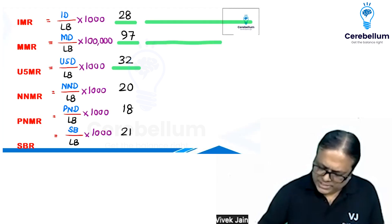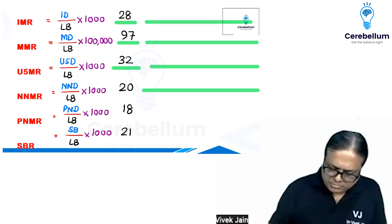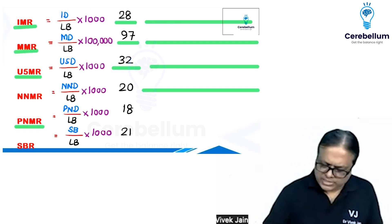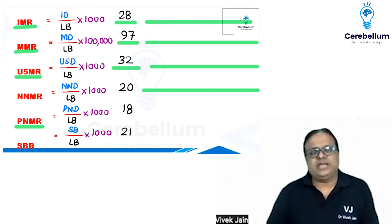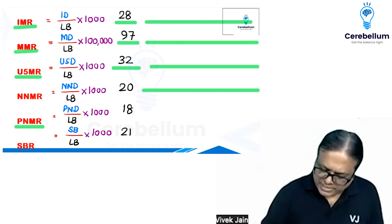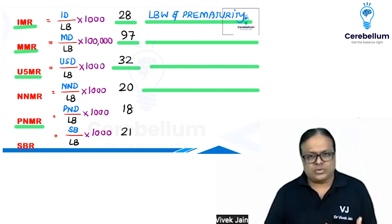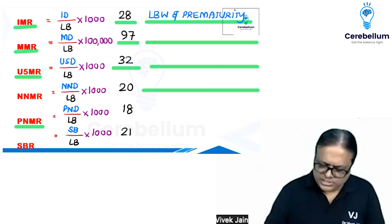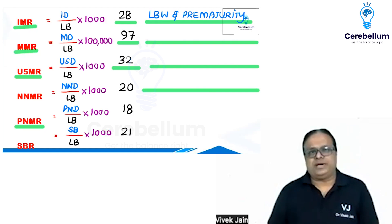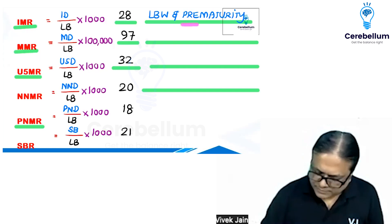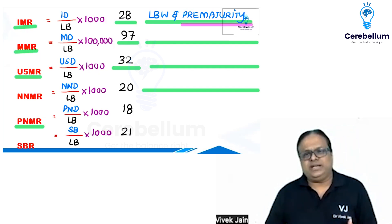Now let us look at the most common causes — these are the topics asked in your exam. The most common cause of infant mortality in the country is low birth weight and prematurity. In one FMG paper, these were given as separate choices. If low birth weight and prematurity are listed separately, the single best answer to mark is prematurity, as it is the more common cause of IMR.